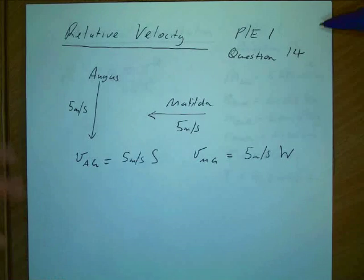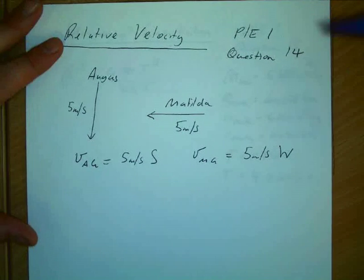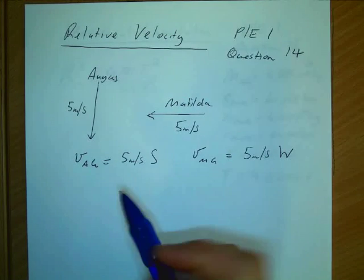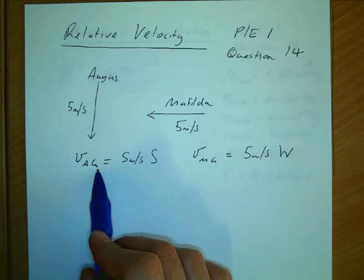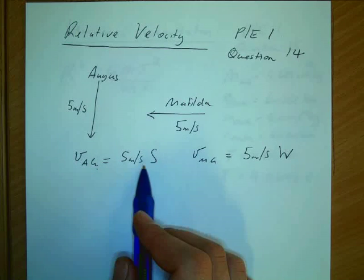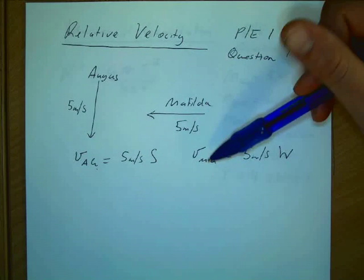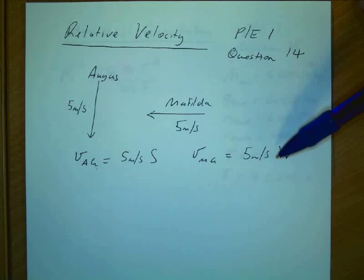This is a relative velocity question from the practice exam, question 14. We're told that Angus is travelling at 5 metres per second south. So the velocity of Angus with respect to the ground is 5 metres per second south. And the velocity of Matilda with respect to the ground, VMG, is 5 metres per second west.